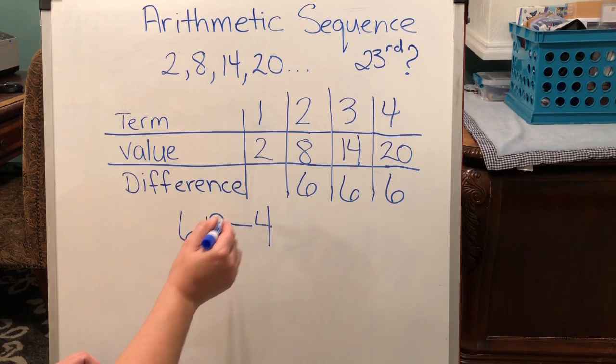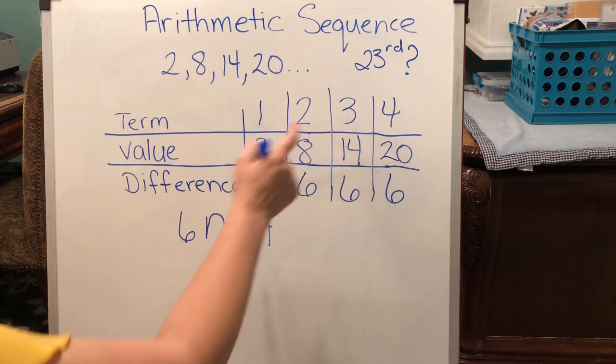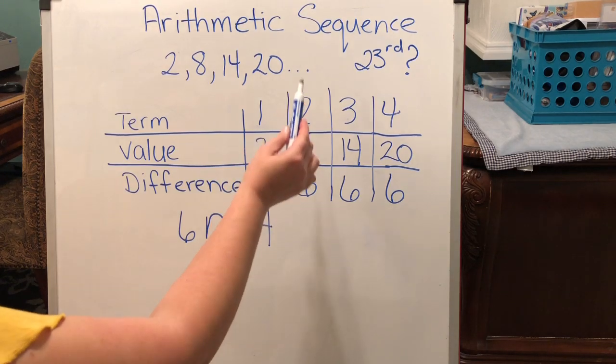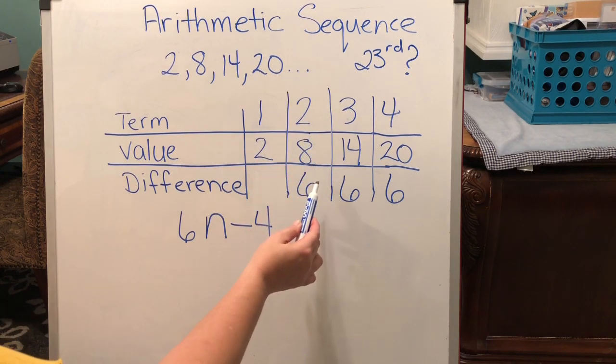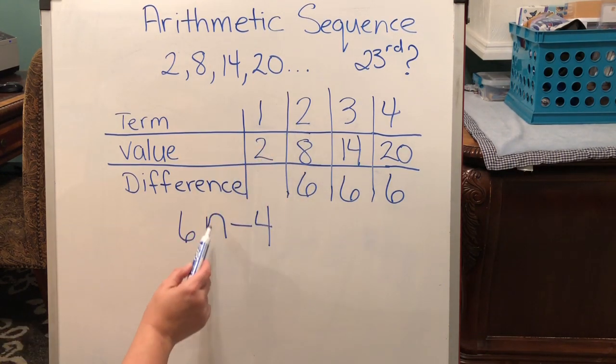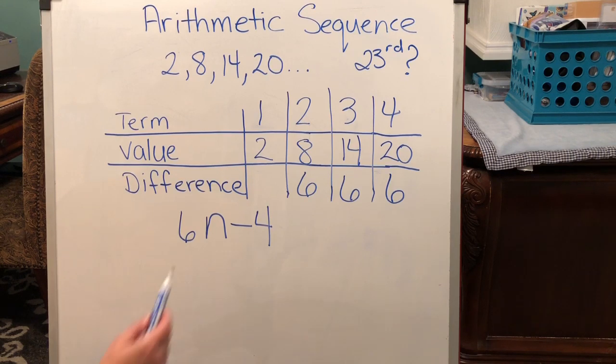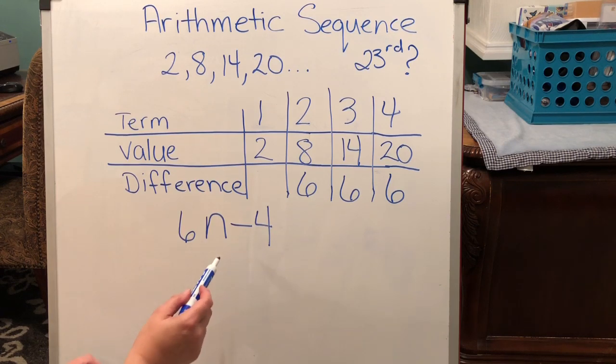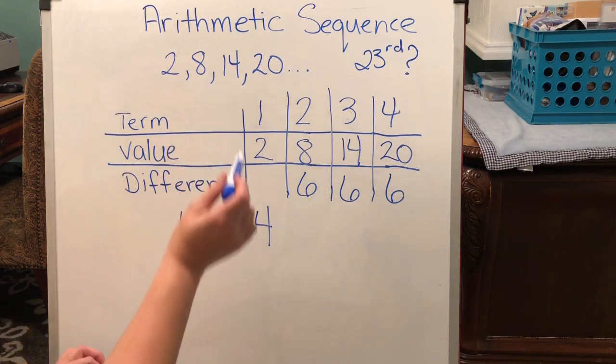n is the term number. So, let's just pick a different one this time. Let's pick the second term. And if I take 2, and I times it by the difference, which is 6, so 2 times 6 is 12, we know that value is really 8. What do I have to do in order to get from 12 to 8? I need to take away 4. And you'll notice that it will be true for each term.